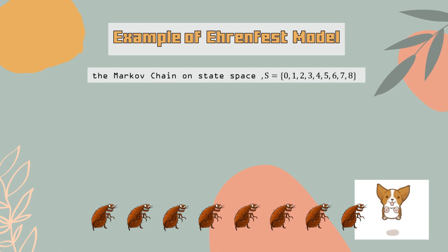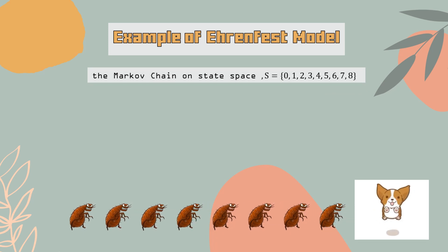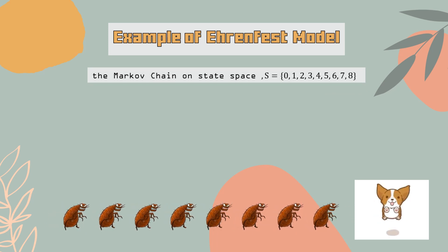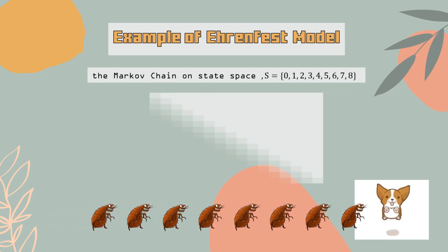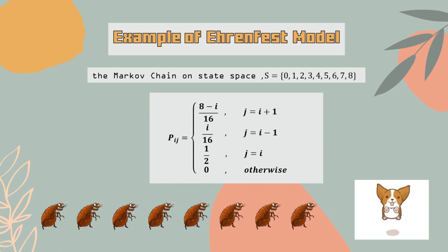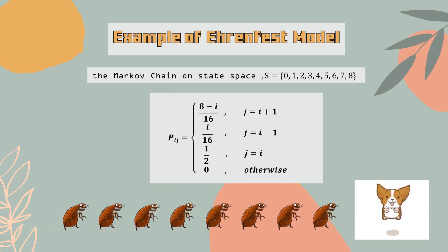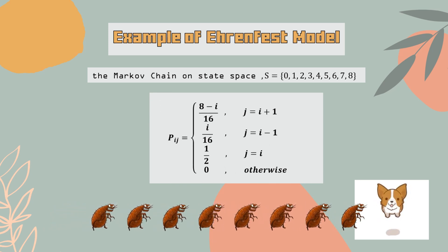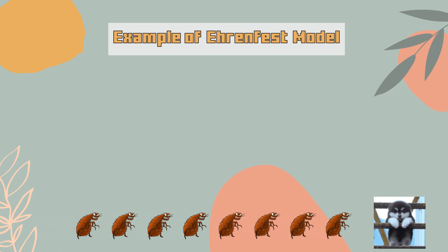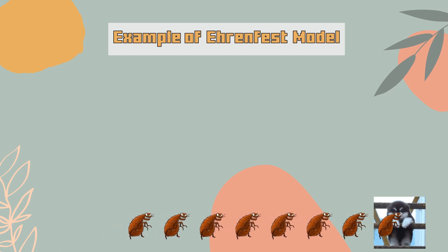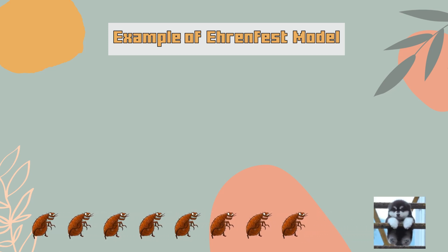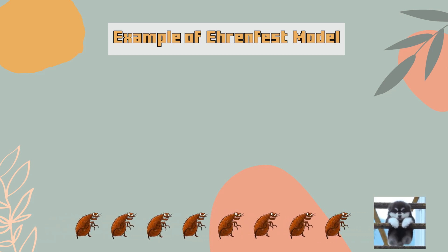By substituting N = 8 into the general formula, the transition probability matrix may be calculated easily and is obtained as shown.